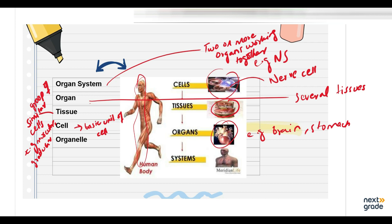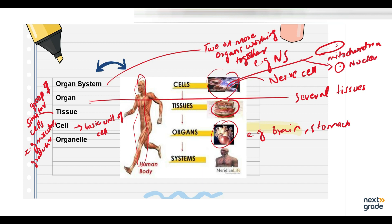The next level is the organelle level. An organelle is a structure within the cell. Examples include the mitochondria, the nucleus, and — in plant cells — the chloroplast. These are all examples of organelles.